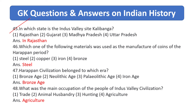In which state is the Indus Valley site Kalibangan? Answer is Rajasthan. Which one of the following materials was used in the manufacture of coins of the Harappan period? Answer is steatite. Harappan civilization belonged to which age? Answer is the Bronze Age.